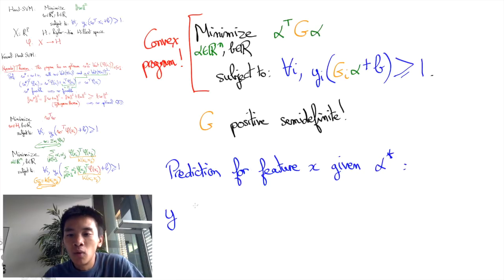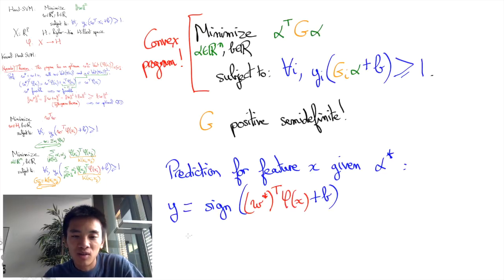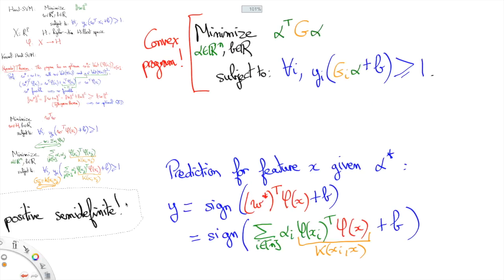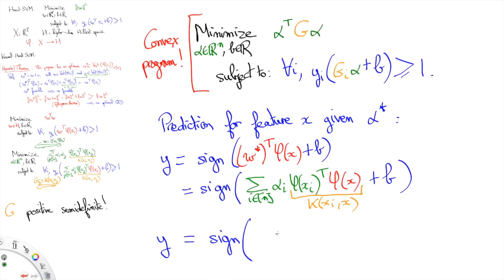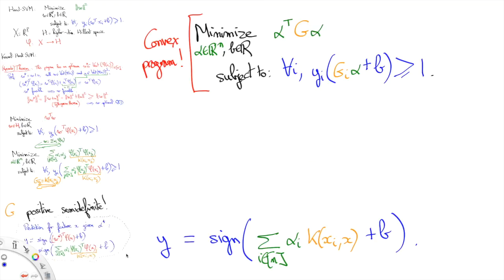Indeed, the label y predicted by some feature x will then be y equals to the sign of w star transpose phi of x plus b, which is equal to the sign of the sum of alpha i phi of xi transpose phi of x plus b, which is equal to the sign of the sum of the alpha i k of xi x plus b.